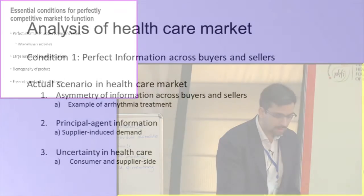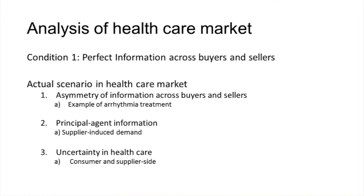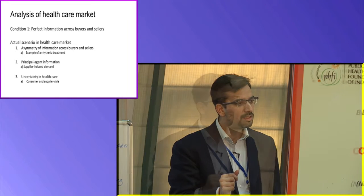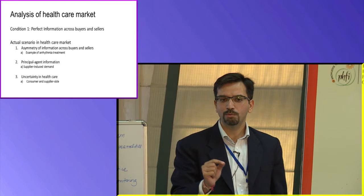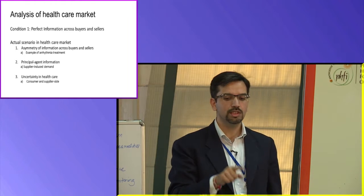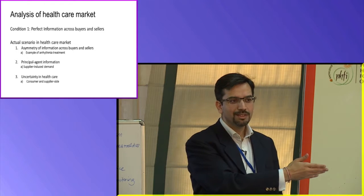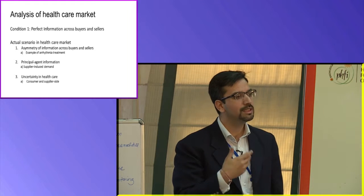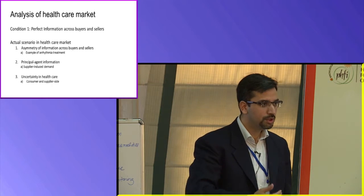Unless you meet these essential conditions, you will not have markets as the best solution for provision of healthcare services. Let us examine what happens in the healthcare market. Condition one: consider an arrhythmia patient — a disorder of the conduction of the heart where your heartbeat might be fast or slow. How many of us — even doctors — know the exact reason what causes arrhythmia? If you go window shopping with a cancer patient from specialist to specialist, one will say radiation therapy, another will say surgery then radiation, a medical oncologist will say chemotherapy. As a consumer you do not know anything at all.